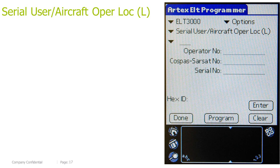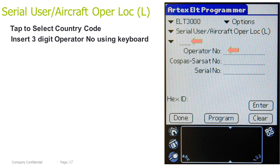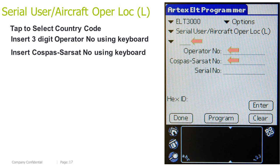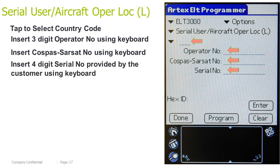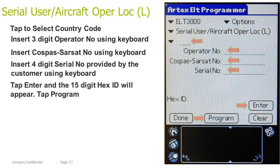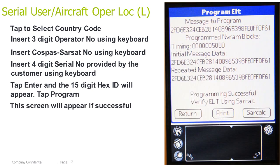Serial user, aircraft operator, location long. Tap to select a country code. Insert 3-digit operator number using the keyboard. Insert Cospas-Sarsat number using the keyboard. Insert the 4-digit serial number provided by the customer using the keyboard. Tap Enter and the 15-digit HEX ID will appear. Tap Program. This screen will appear if successful.